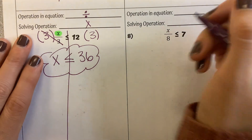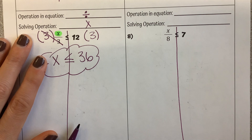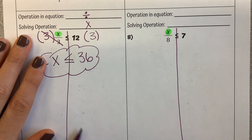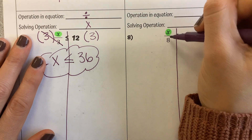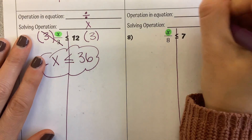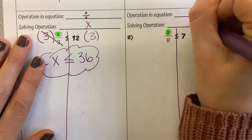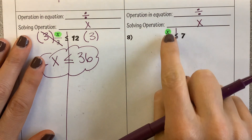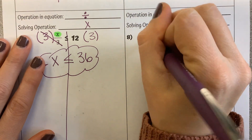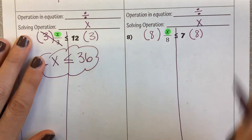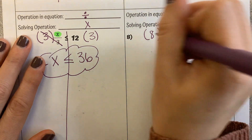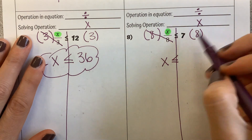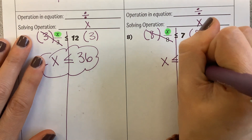And the last one that is just solving. Draw a line down our inequality symbol, highlight our variable. There's no plus, there's no minus. I see this fraction bar, which means division is in the problem, so we solve with multiplication. X is being divided by 8, so we are going to multiply each side by 8. On this side, our 8s cancel, we're left with X. Bring down the inequality symbol. 7 times 8 is 56.